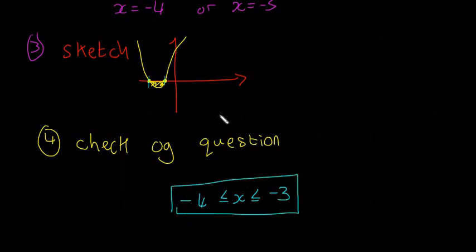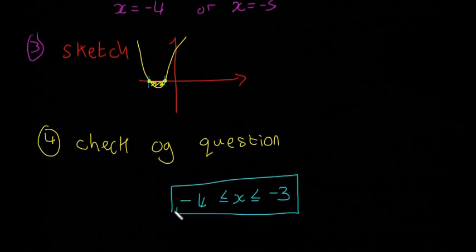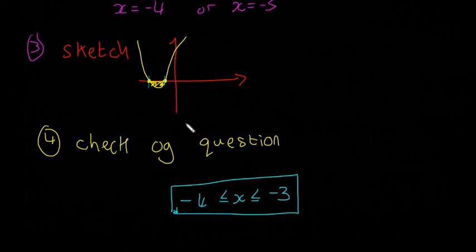So you got those numbers just from this step here, step 2. And then you get just which way these symbols are pointing from the sketch, and also from checking the original question.